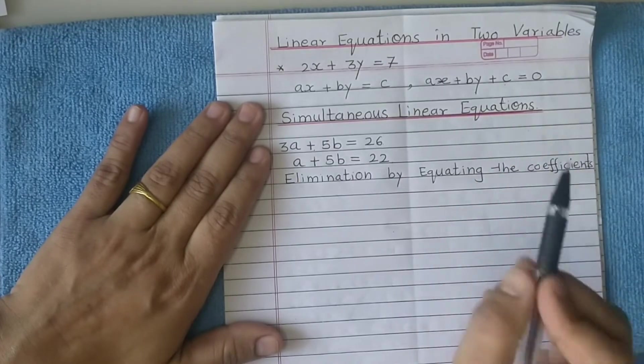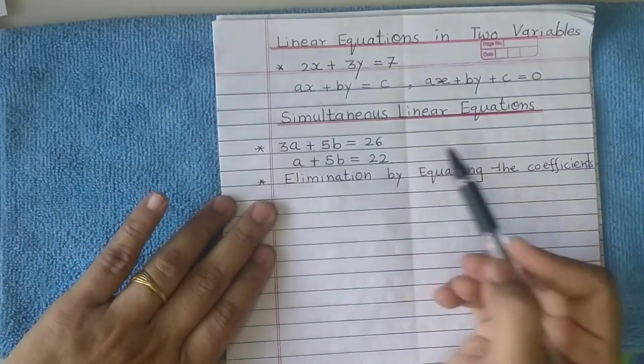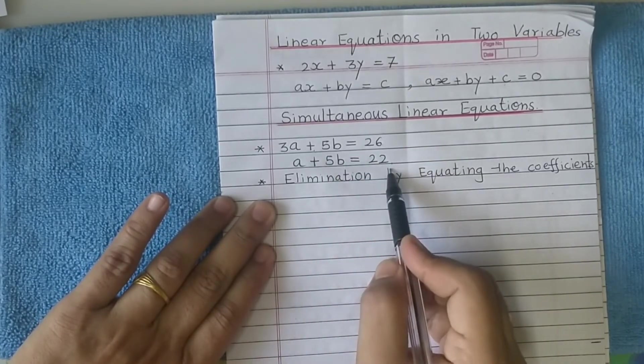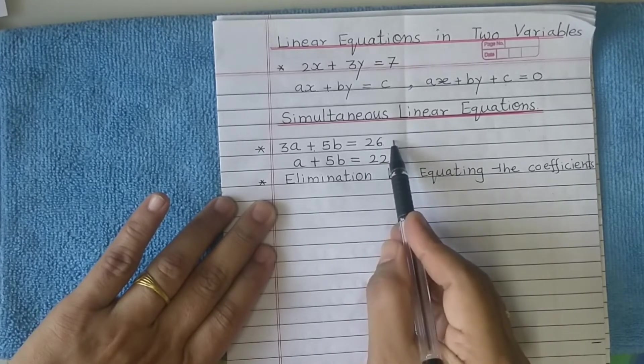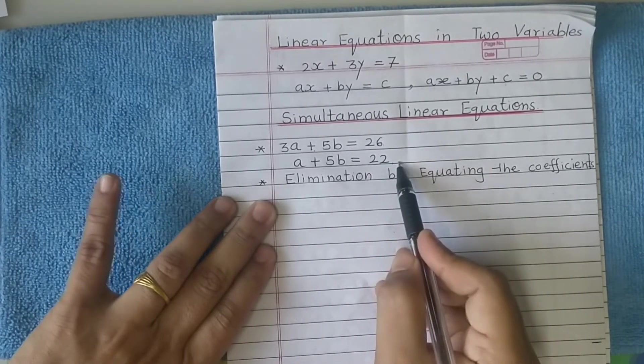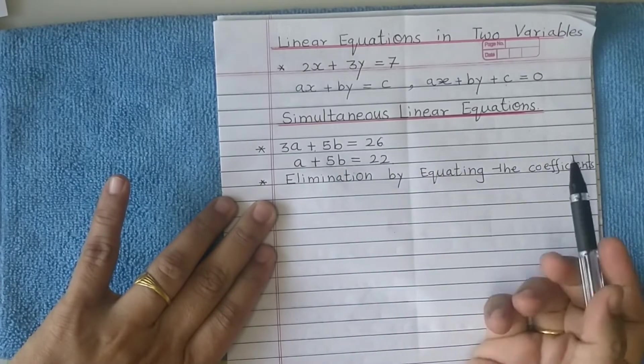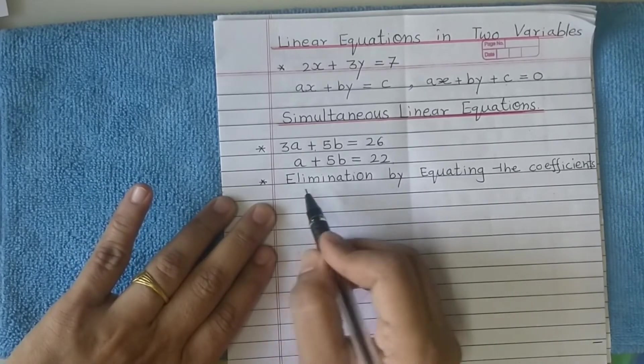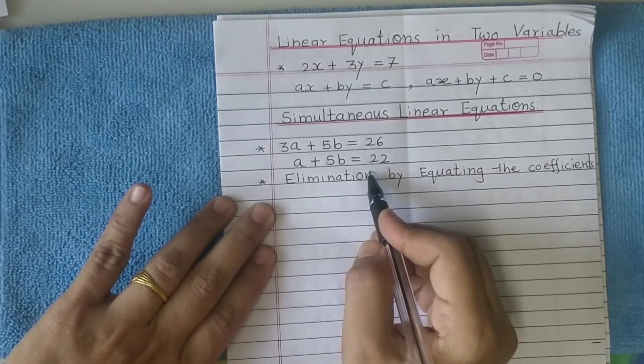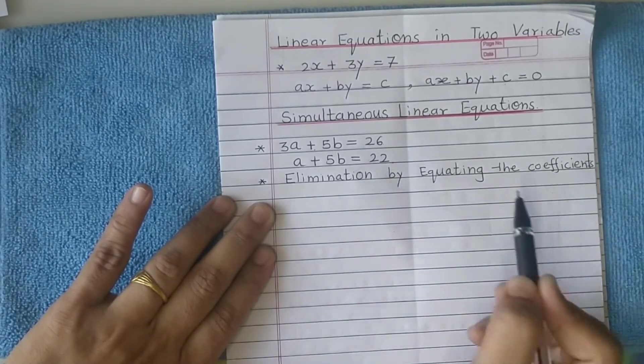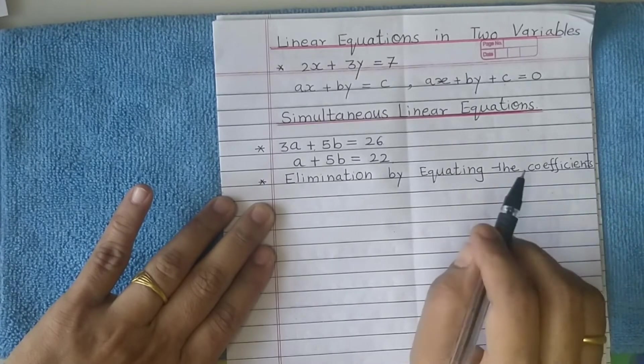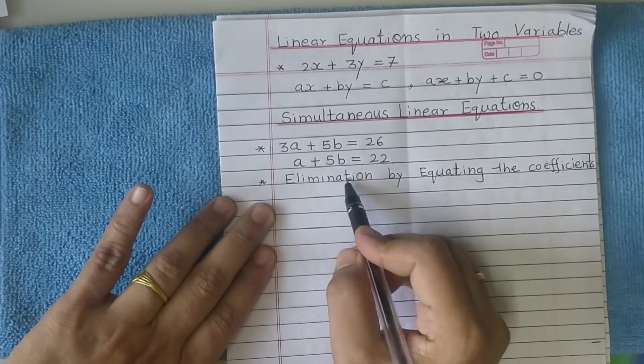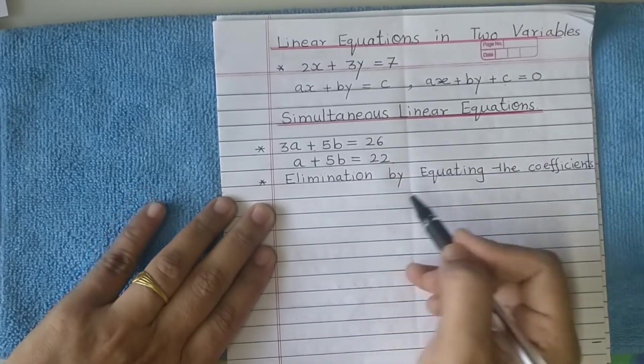Now what are simultaneous linear equations? If we take two linear equations in two variables, say a and b, together, then they are known as simultaneous linear equations as they may get satisfied with the same set of values of variables. In this video we shall discuss the method of solving simultaneous equations by elimination method. In elimination by equating the coefficients, we shall think of removing one of the variables by equating its coefficient.